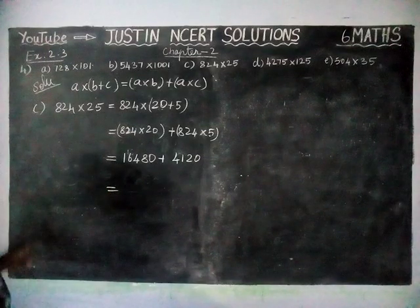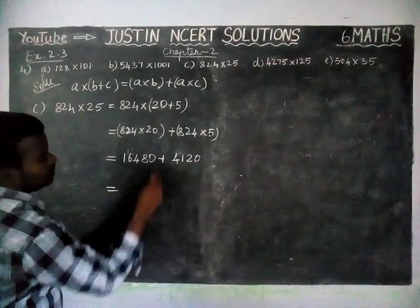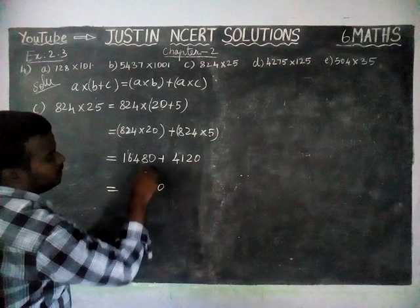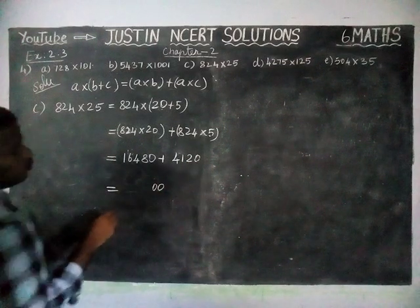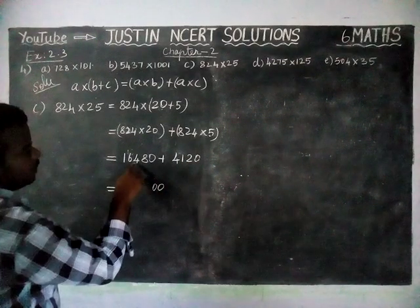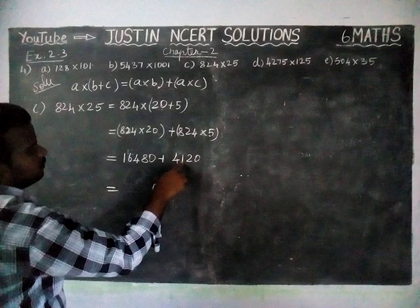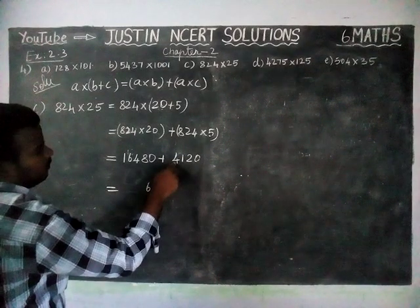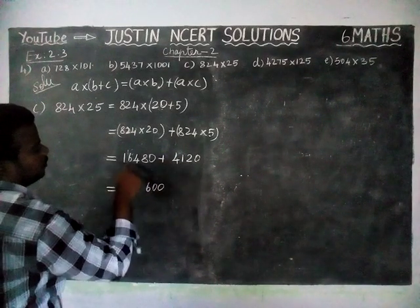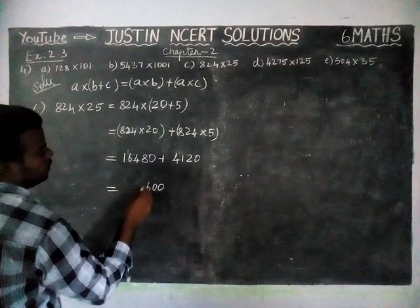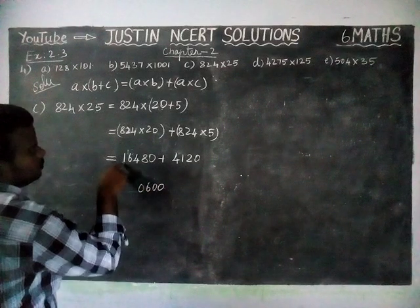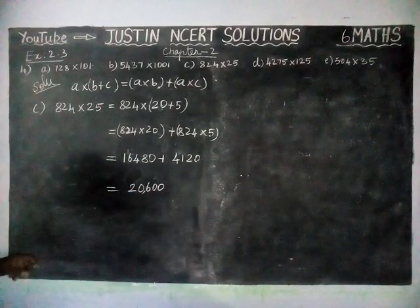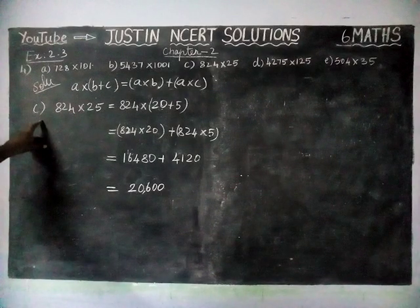Now we are going to add the numbers. Ones digit: 0 plus 0 is equal to 0. Next: 2 plus 8 is equal to 10, remaining 1. 4 plus 1 is equal to 5, 5 plus 1 is equal to 6. Here 4 and 6: 4 plus 6 is equal to 10, remaining 1, so 1 plus 1 is equal to 2. So 20600 is the answer for option C.